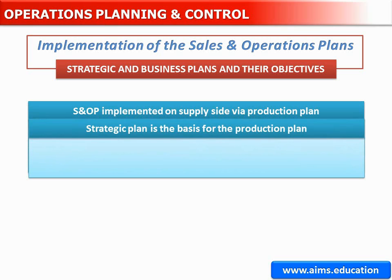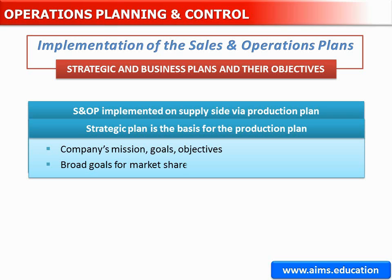The strategic plan is the basis for the production plan. It clearly identifies the company's mission, goals, and objectives, and sets the high-level direction of the organisation, including broad goals for market share, revenue, profits, and growth.